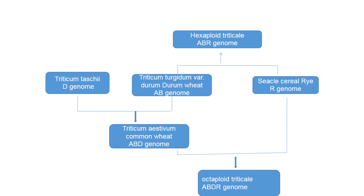To obtain hexaploid triticale with ABR genome: Triticum tauschii (D genome), Triticum turgidum (durum wheat), and secale cereale (rye) were crossed. When D and AB genomes come together, it becomes hexaploid wheat (Triticum aestivum), and by crossing that to rye, the octaploid triticale with ABDR genome was obtained. By doubling the chromosome number, the successful cultivated triticale form was obtained.